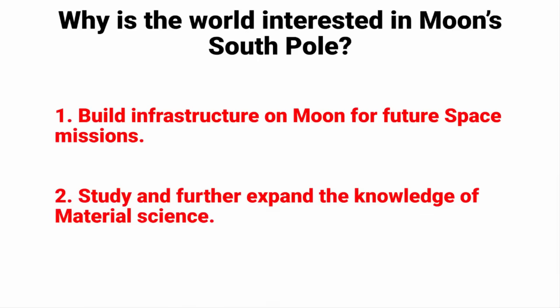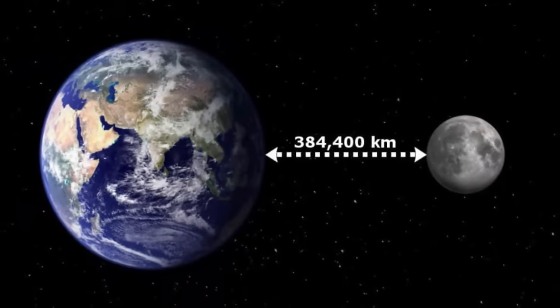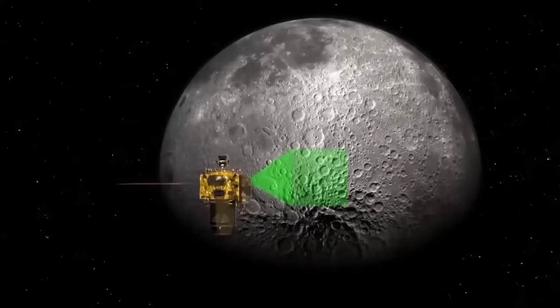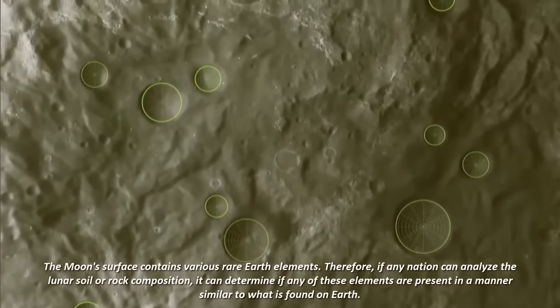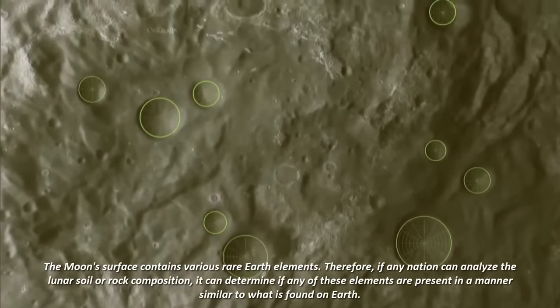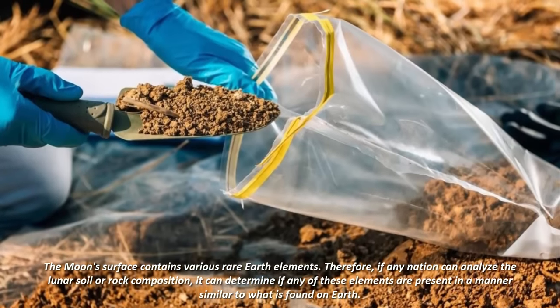The second reason is to study and further expand the knowledge of material science. Because the Moon is Earth's closest celestial neighbor, there is a belief that its surface contains various rare earth elements. If any nation can analyze the lunar soil or rock composition, it can determine if any of these elements are present in a manner similar to what is found on Earth.